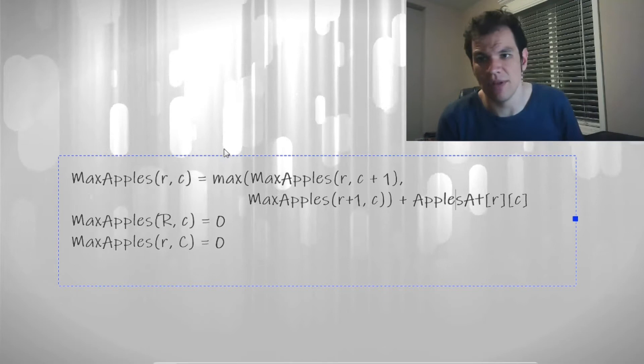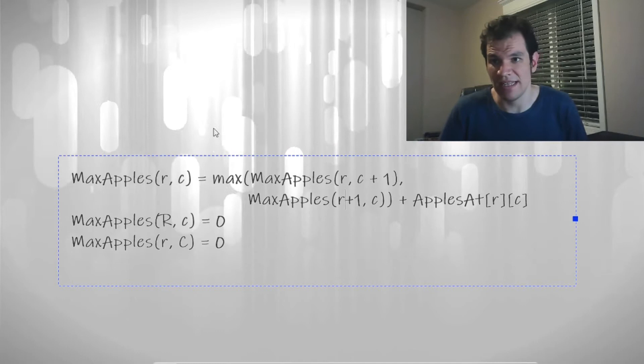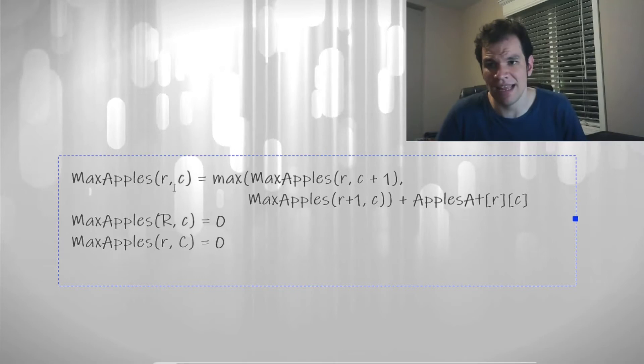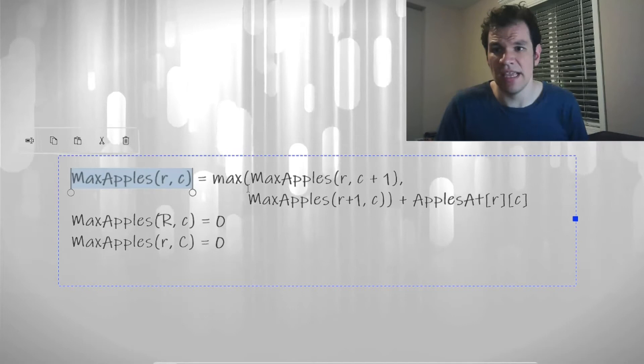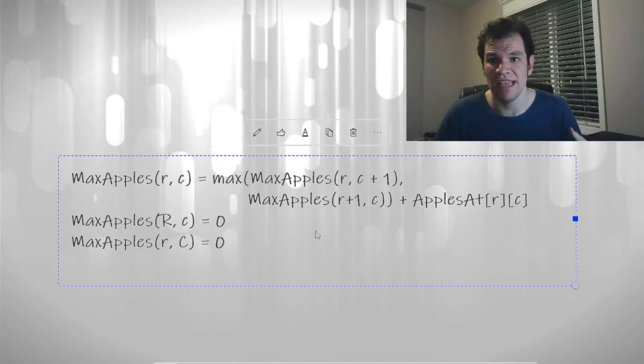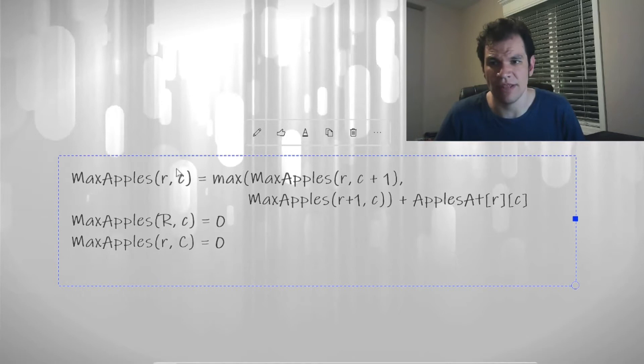In the right side of this formula, the values required for the arguments of MaxApples that is r and c plus 1 or r plus 1 and c are bigger or equal than the arguments on the left side. So that means that in order to compute this thing, it would be enough if we know that the positions of the table with greater row or greater column were already computed. It doesn't matter in which order they were filled, we only need to be sure that they were already computed when we are filling this position.